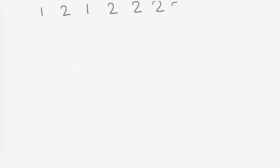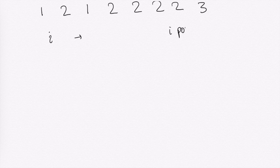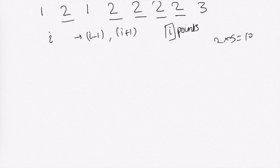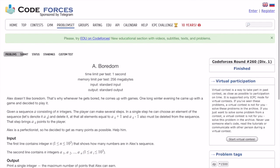To clarify: the array is 1 2 1 2 2 2 2 3. Every time you select an i-th number you get i points, but you cannot select the (i-1)-th or (i+1)-th number from the array. We have to maximize the total points. In this case the maximum is when we select only 2, which is 2 times 5 equals 10.